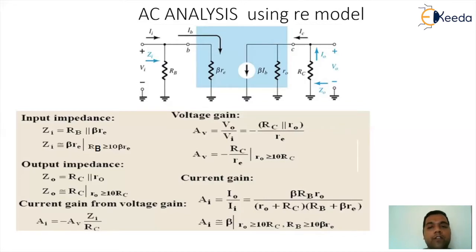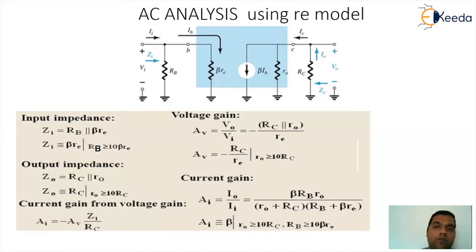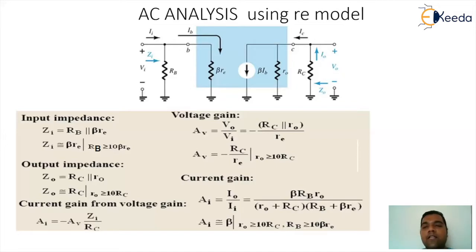For the voltage gain AV, we calculate VO divided by VI, and we are left with the term minus RC divided by RE. The minus sign indicates that the voltage gain is negative, implying this is an inverting amplifier. Whatever signal you give on the input side will get phase shifted by 180 degrees along with amplification on the output side. That's the significance of the minus sign — this is an inverting amplifier, as opposed to a non-inverting amplifier.